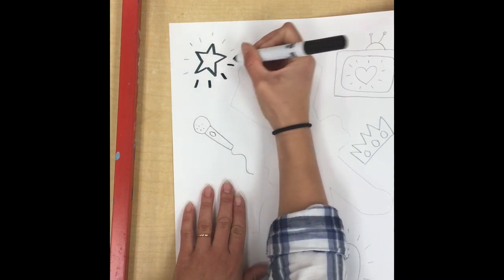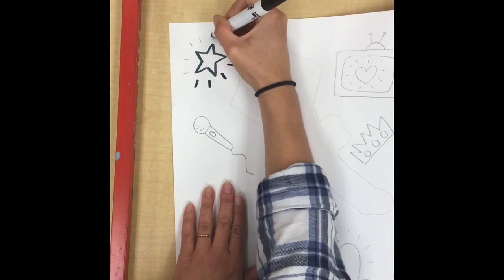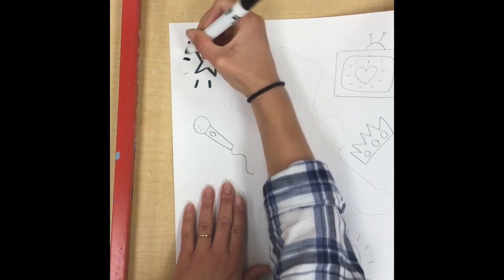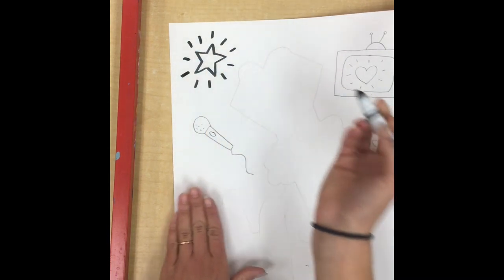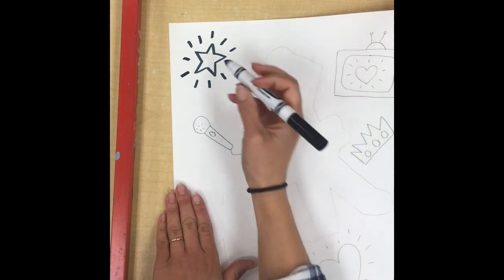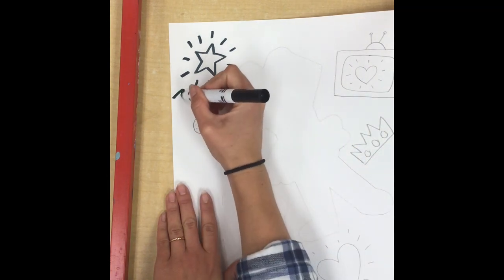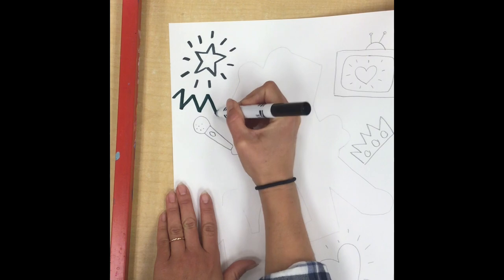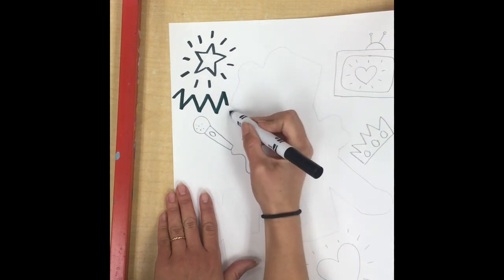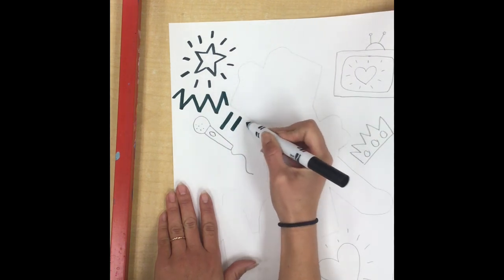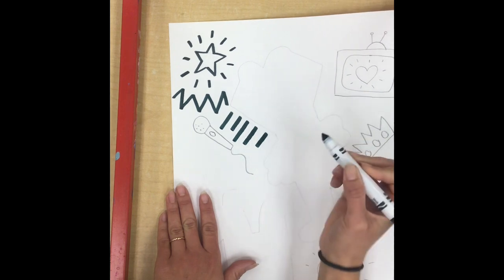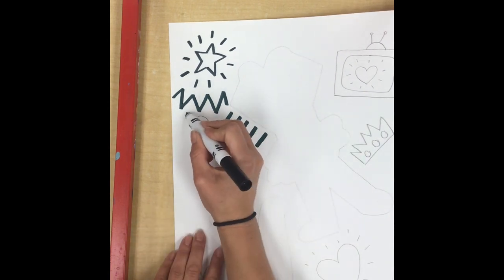Now in the even smaller spaces around our symbols, we get to fill this with creative line designs. Think about all of the different kinds of lines you know: zigzag, maybe some straight lines that repeat, maybe some wavy lines.